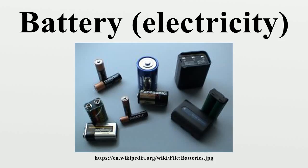Secondary batteries, also known as secondary cells or rechargeable batteries, must be charged before first use. They are usually assembled with active materials in the discharged state. Rechargeable batteries are charged by applying electric current, which reverses the chemical reactions that occur during discharge. Devices to supply the appropriate current are called chargers.